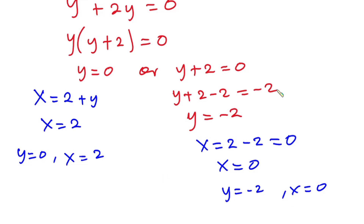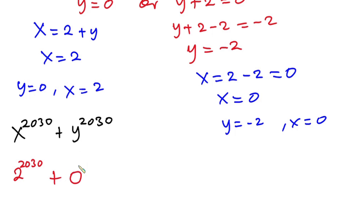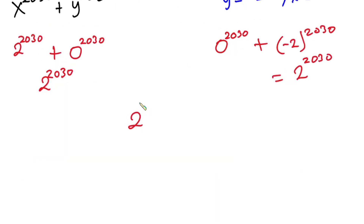Now let's plug these values into x to the power 2030 plus y to the power 2030. We know x is 2, so we have 2 to the power 2030, then plus 0 to the power 2030, which gives 2 to the power 2030. From the other case, x is 0, so we have 0 to the power 2030, then plus negative 2 to the power 2030. Since the exponent is an even number, this is the same as 2 to the power 2030. So in either case, the final answer is 2 to the power 2030.